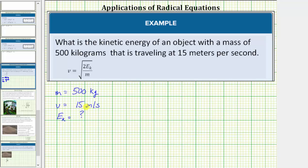For the first step we substitute 500 for m and 15 for v in our equation. Performing this substitution gives us the equation 15 equals the square root of two times E sub k divided by m which is equal to 500. And now we need to solve this equation for E sub k to determine the kinetic energy.